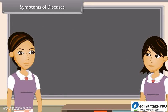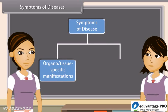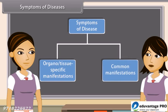Symptoms of diseases — Ankita, I want to tell you that disease symptoms are of two types: organ or tissue-specific manifestations, and common manifestations.